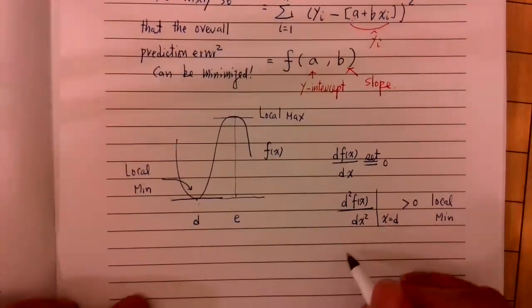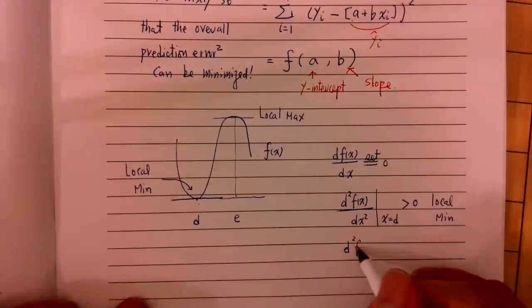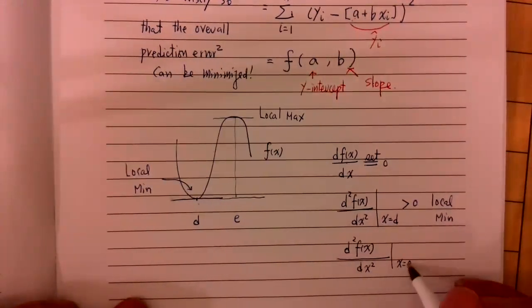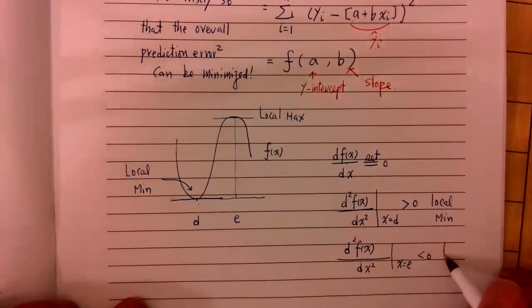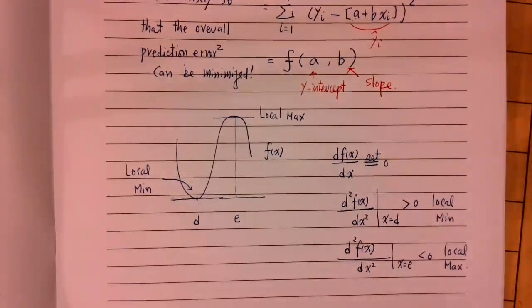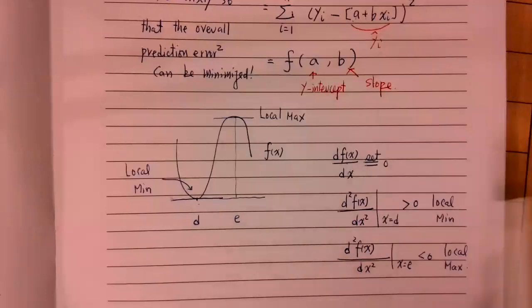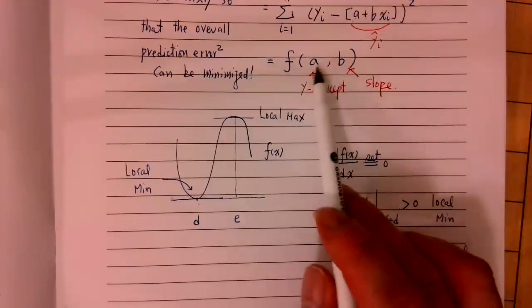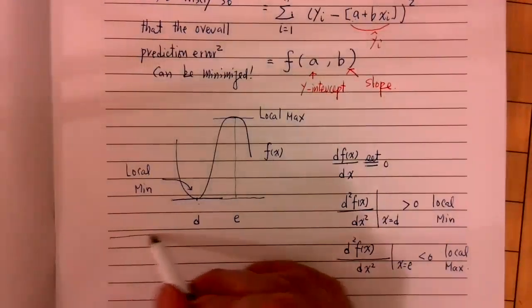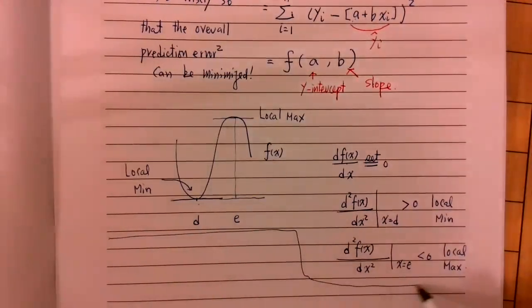If the second derivative at that point is zero, that's a local maximum. But the problem right now is that we don't have just a single variable — we have two variables. When you have two variables, you need to use what we call partial derivatives. And it works very similarly to what you learn from calculus.